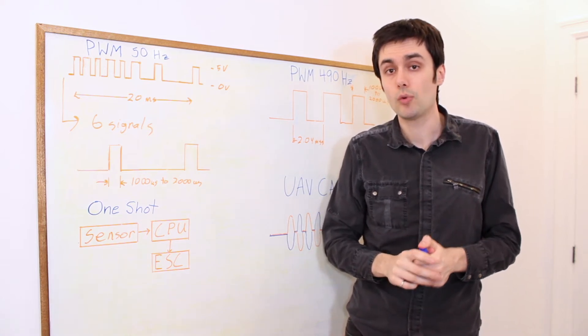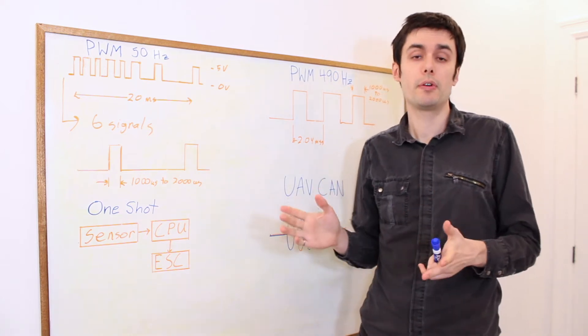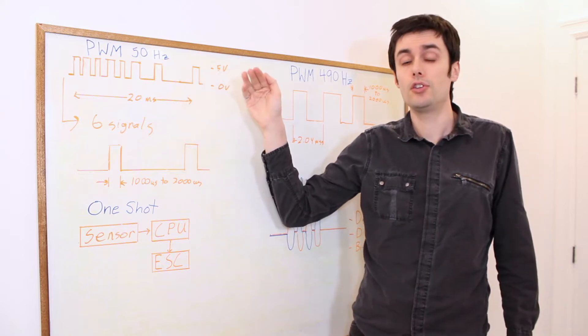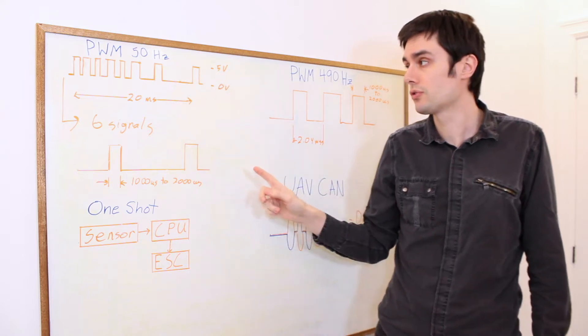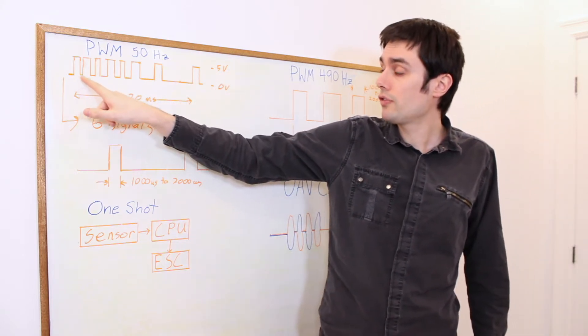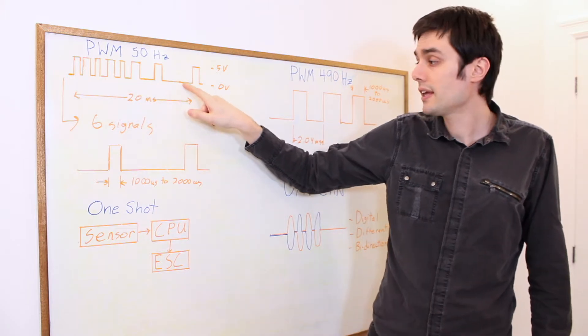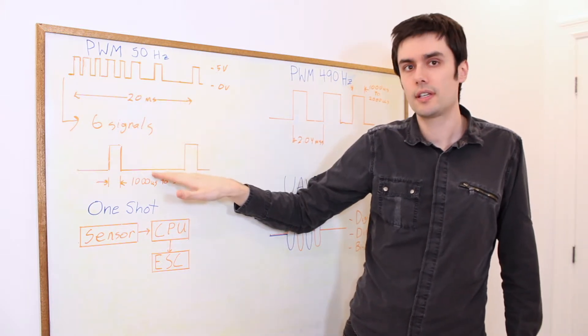Fifty years ago, if you were flying an RC plane, you were probably using something called PWM 50 Hz between your wireless receiver and your servos. How it worked is that you had all of your signals in a single wireless link that was then separated into six signals here.